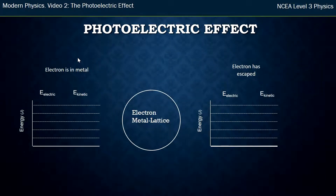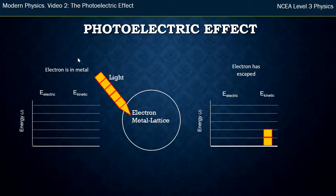When I talk about energy, I like to describe it using a flow chart. Here we have the electron that escaped from the metal lattice. It's easy to talk about what type of energy it has after the interaction — after the electron has escaped and is moving, so it has kinetic energy. Where did it get that energy from? It got it from the light. I've got five bars of energy coming in and it has two bars of kinetic energy.